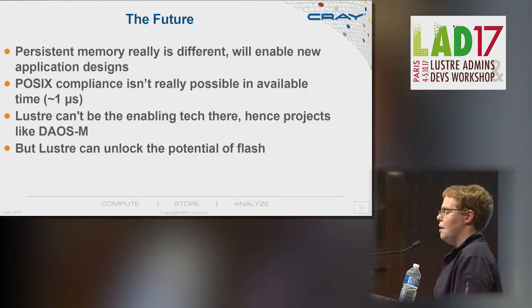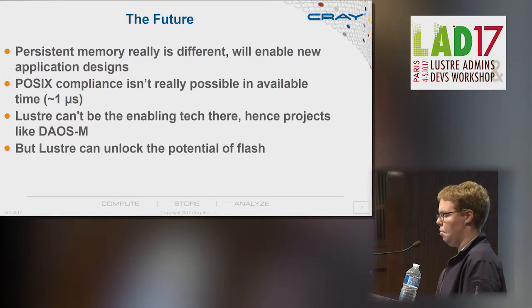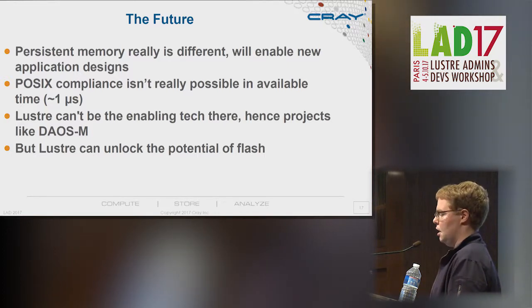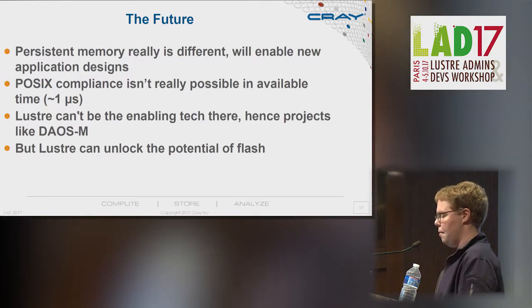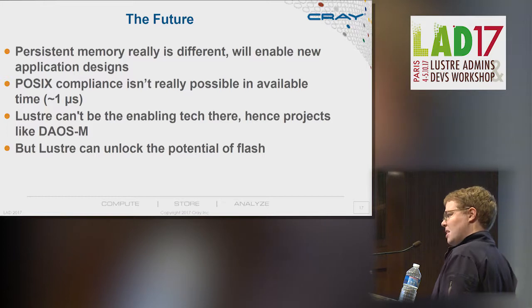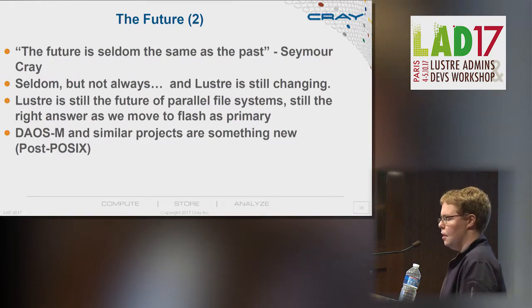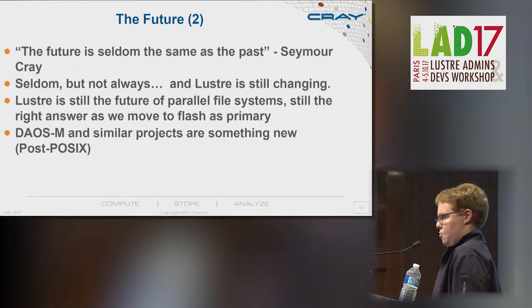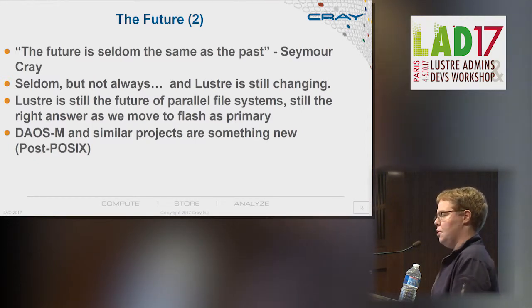POSIX compliance at persistent memory latency is impossible. You have one microsecond — there's no way to get consistency in a distributed file system in a single microsecond. So Lustre will never really be the enabling tech in the persistent memory world. You've got projects like Intel's DAOS for that. But Lustre seems to be good enough for flash, and flash latency just isn't low enough to justify a redesign.